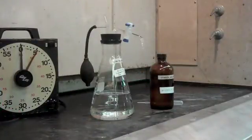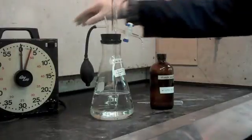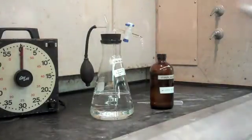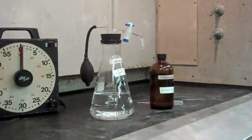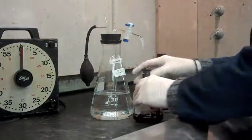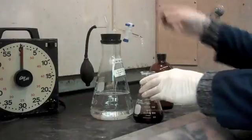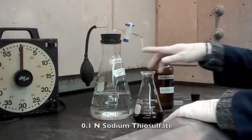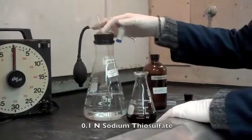Now that our 30 minutes have gone by, we'll shut our timer off here. We'll grab our sample from the dark and we are going to titrate now using a burette. We're going to add the leftover iodine because remember we added an excess. We're going to use 0.1 normal sodium thiosulfate.